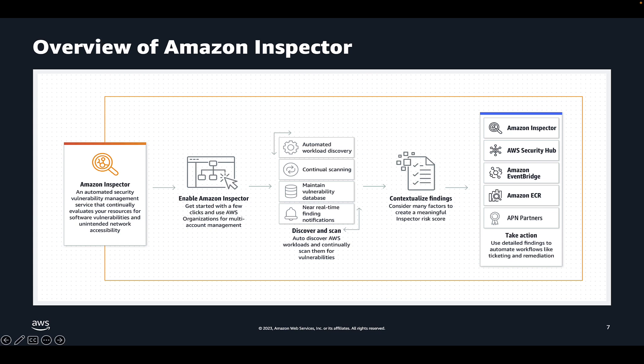You can access the search capabilities using both the Inspector console and APIs. Note that Amazon Inspector also includes additional details for each finding, such as which versions a CVE is fixed in and remediation instructions. Now let's take a look at how you can use the AWS Management Console to view Amazon Inspector and search Inspector's vulnerability database for more information about the relevant CVE.